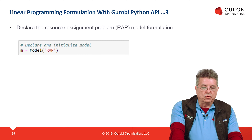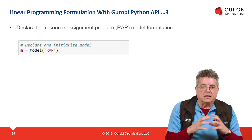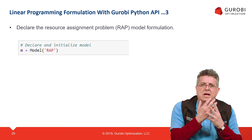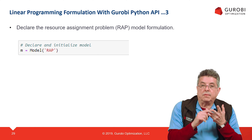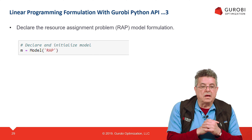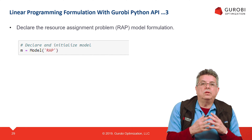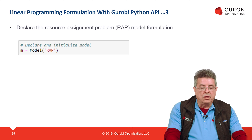Next, we declare the resource assignment problem. We define a model object M that will capture everything related to the linear programming formulation. As you remember, when we formulate the RAP problem we have four components: the data, the decision variables, the constraints (one for jobs and one for resources), and the objective function. This model object M will contain all these elements, and the name of this model will be RAP.